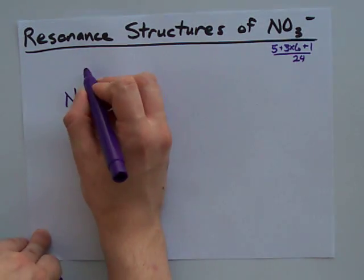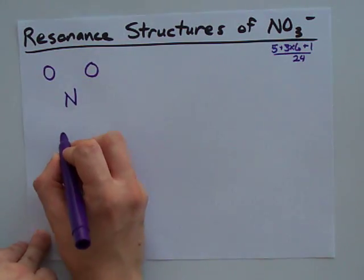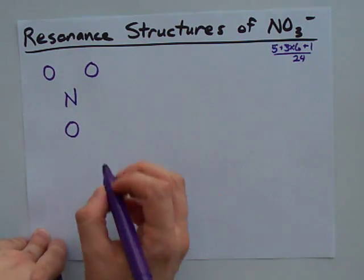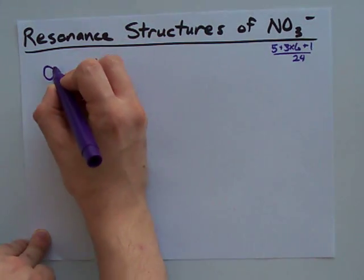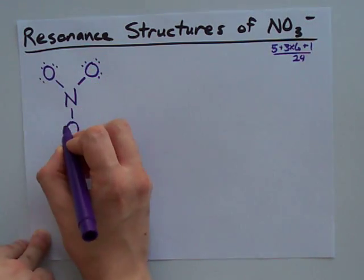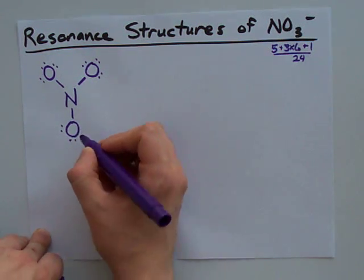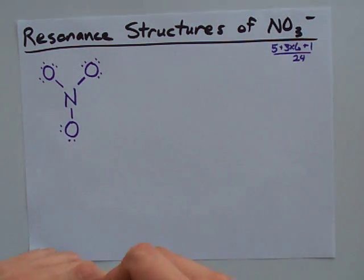So, nitrogen in the center, oxygens around it, we need 24 electrons. 2, 4, 6, 8, 10, 12, 14, 16, 18, 22, 24, and we're done. That's all we can do.